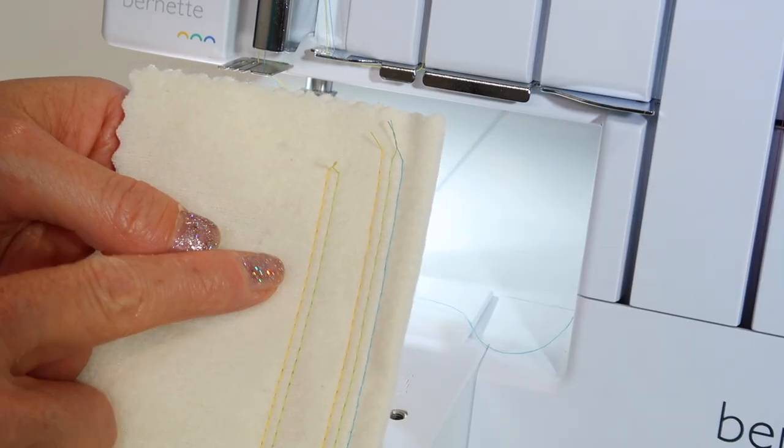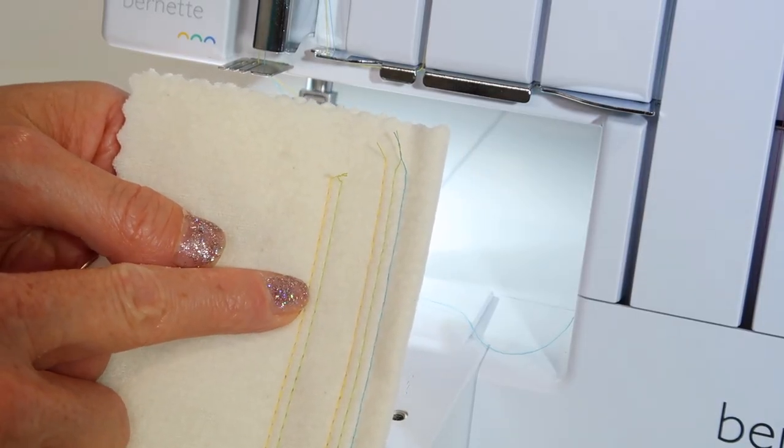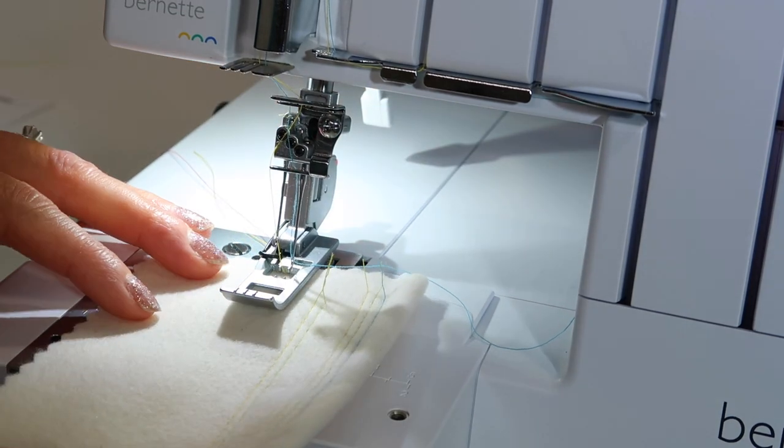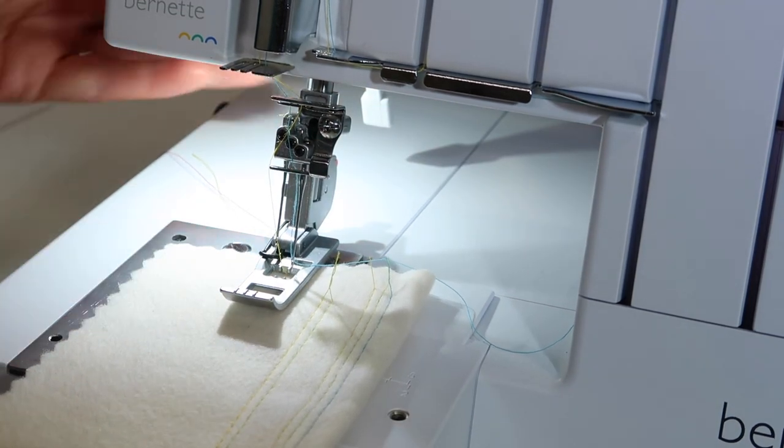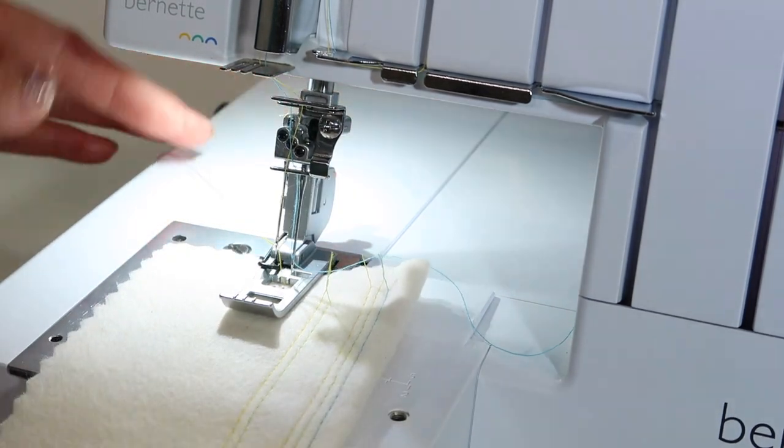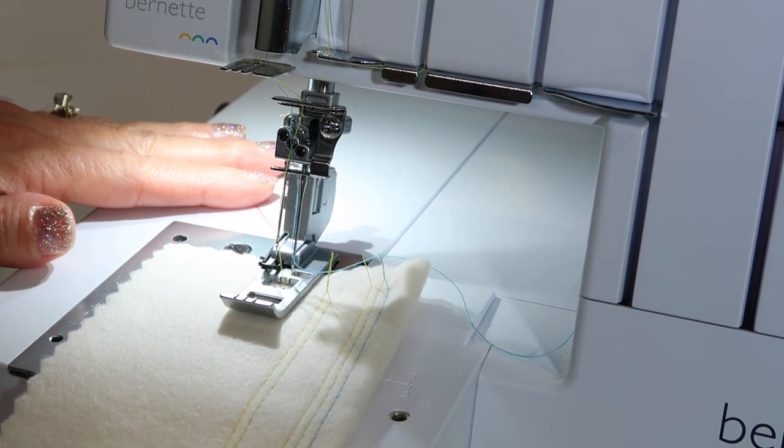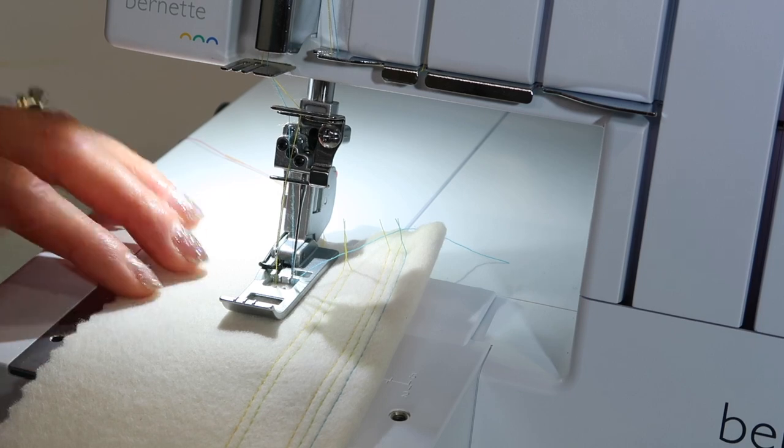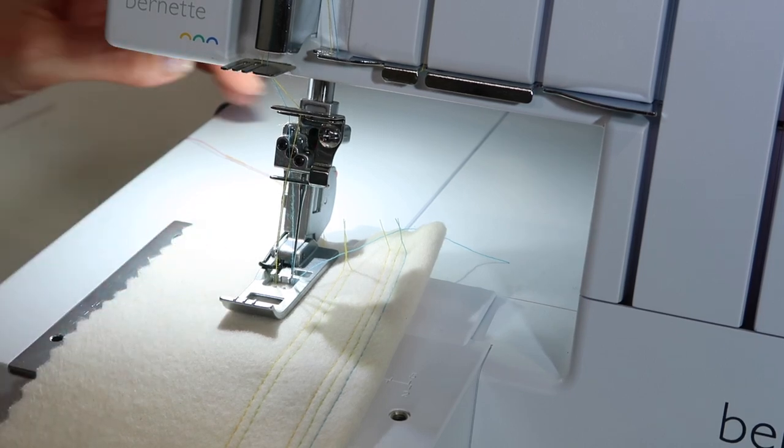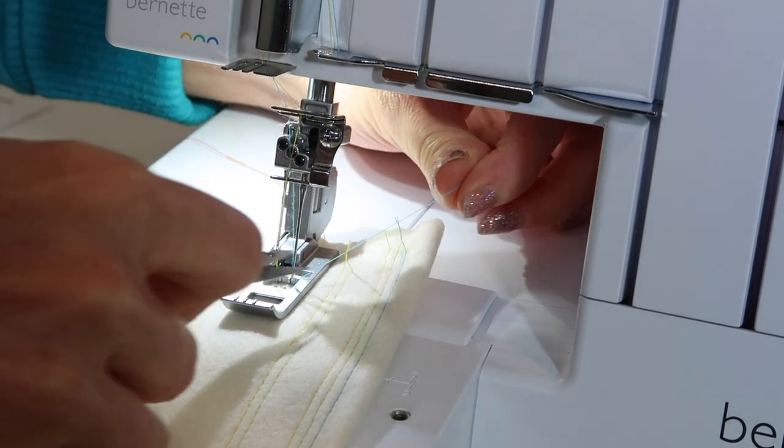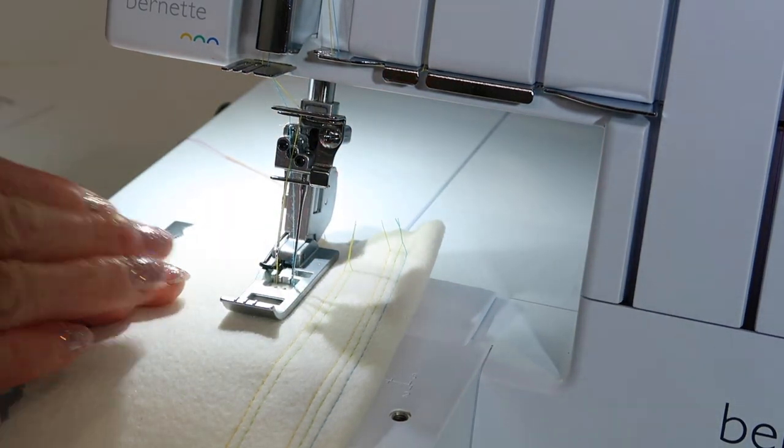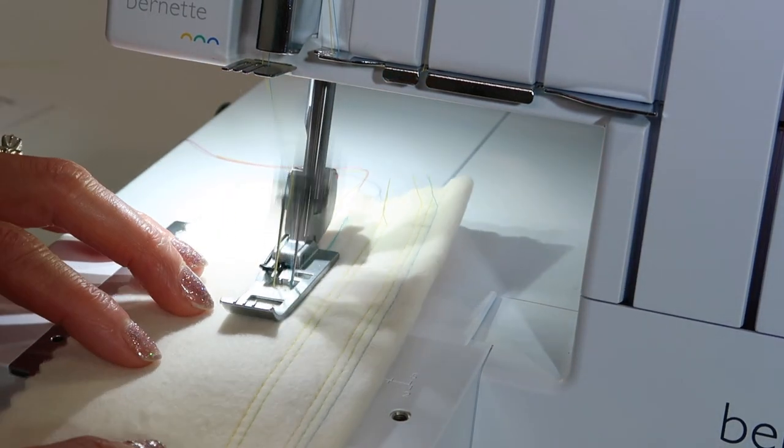It will be fun to compare the narrow version of the cover stitch to the wider version. Make sure you lift up your presser foot and start on the fabric. It really doesn't matter where your threads are placed. They'll work themselves down into the foot, but if they are bothering you, you can always give them a quick little haircut so they'll go down underneath a little bit quicker.